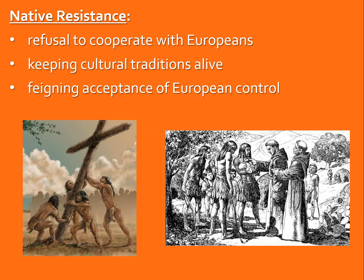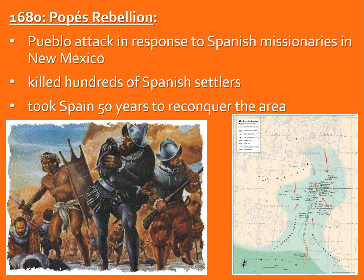Another thing you could do is feign acceptance — pretend you accept European control, pretend you are Catholic, pretend you're going to live the lifestyle of a Spanish settler. But that's just for show, to keep the Spanish off your back, and that's a means of resistance. Violent resistance also happened, often in smaller individual circumstances. Organized resistance was much less common, at least on the scale of what we're going to look at next, which is probably the biggest and most successful Native American revolt we'll cover all year.